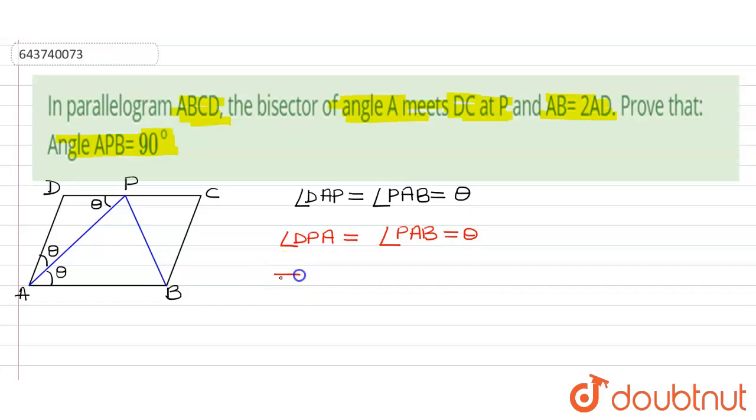So from this, we can say that angle DAP is equals to angle DPA. So in triangle ADP, we have AD is equals to PD because these two angles are equal. So we have these two sides are equal.